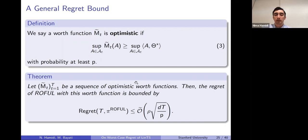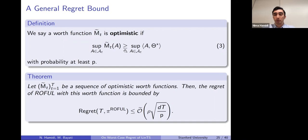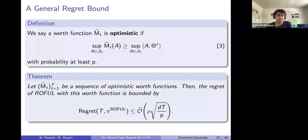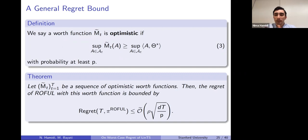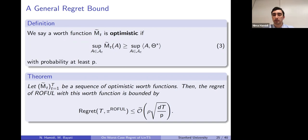Q: Why is it a supremum rather than for all actions? A: The alternative you're proposing is a stronger requirement. We just want to ensure that if there is an action achieving a reward of, say, five, we assign a worth of five or above to at least one action. We don't care about all other actions — it's perfectly fine to underestimate them.